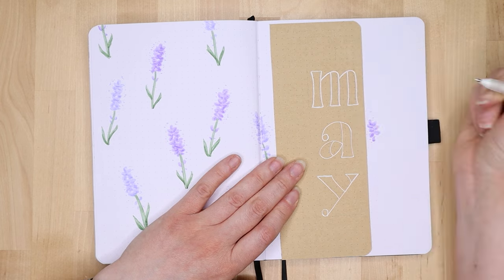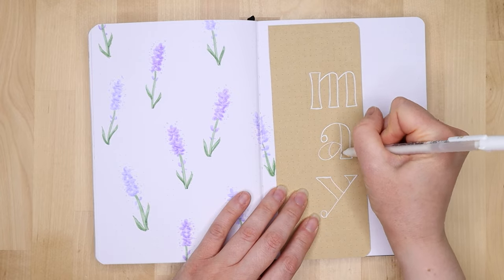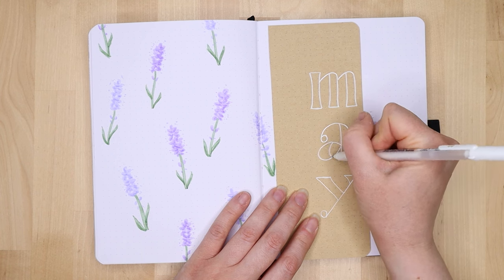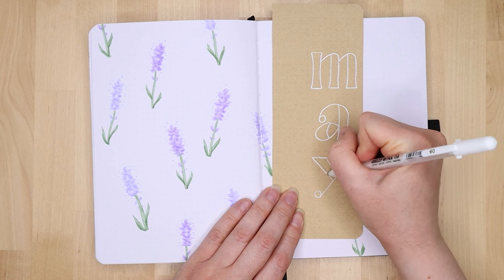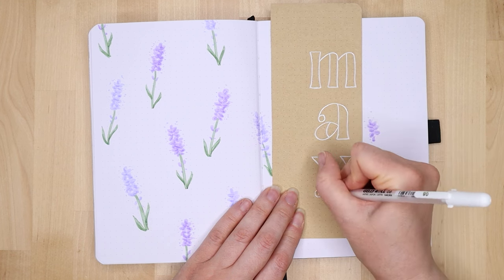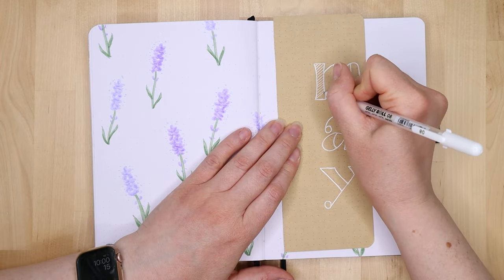I've written the letters out in a typewriter style print and then going over them again. I do love these Sakura jelly rolls. They are a great pen. I just find sometimes the ink can be a little inconsistent and you've got to go over things and go back in and wait for it to dry and then go over again, which isn't really a pain.